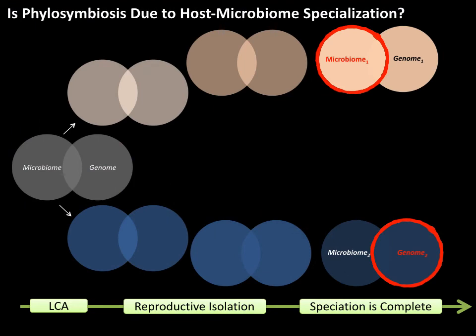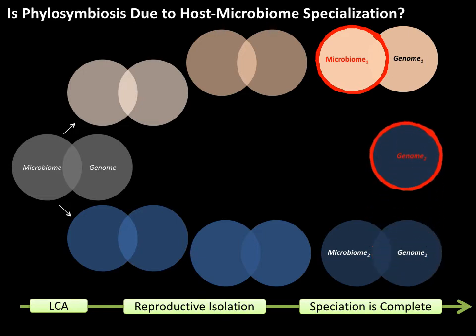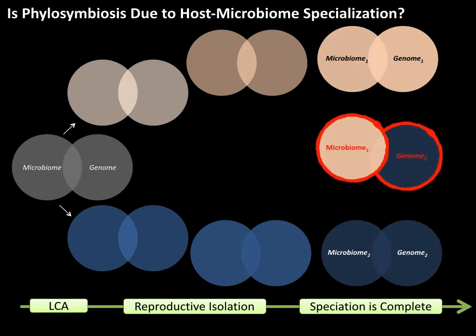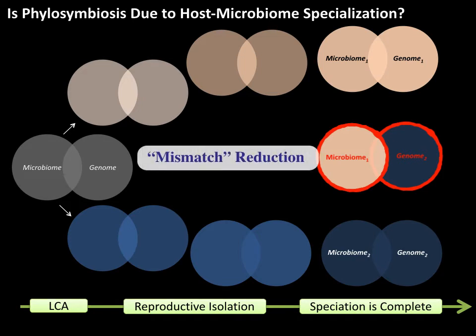When you see phylosymbiosis, there appears to be covariance between host genetics and microbiota structure. But is it functional? Does it matter to the organism? One way to test this is to do microbial transplants, combining different genetic backgrounds with different microbiotas and asking whether there's a reduction in fitness when swapping microbes from one species into the background of another.